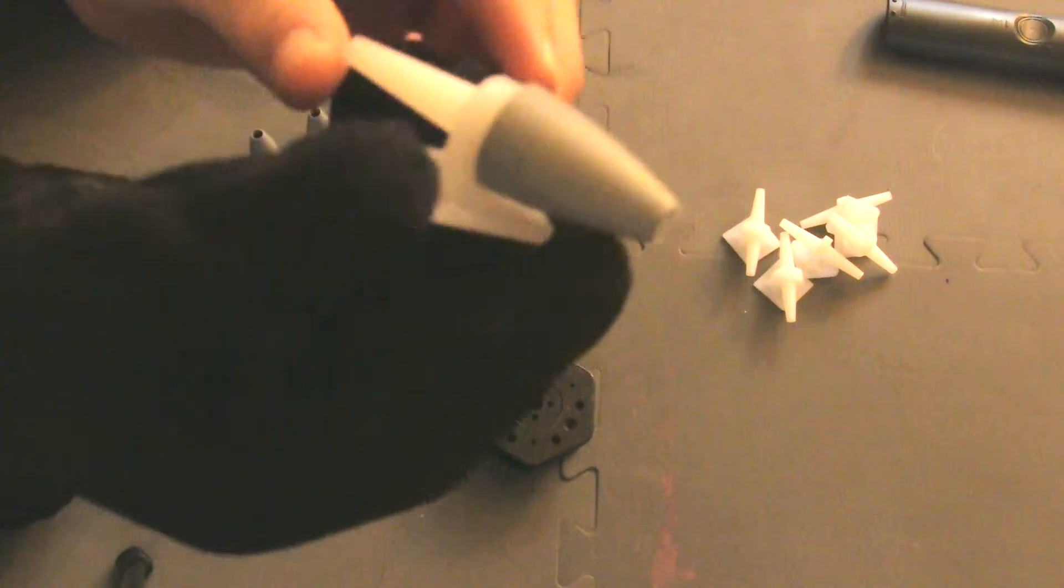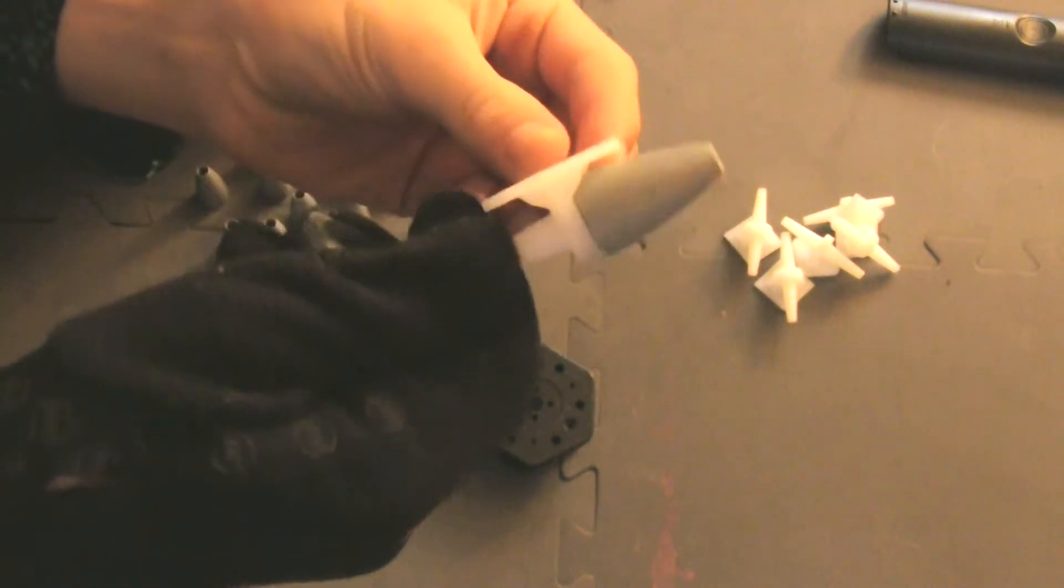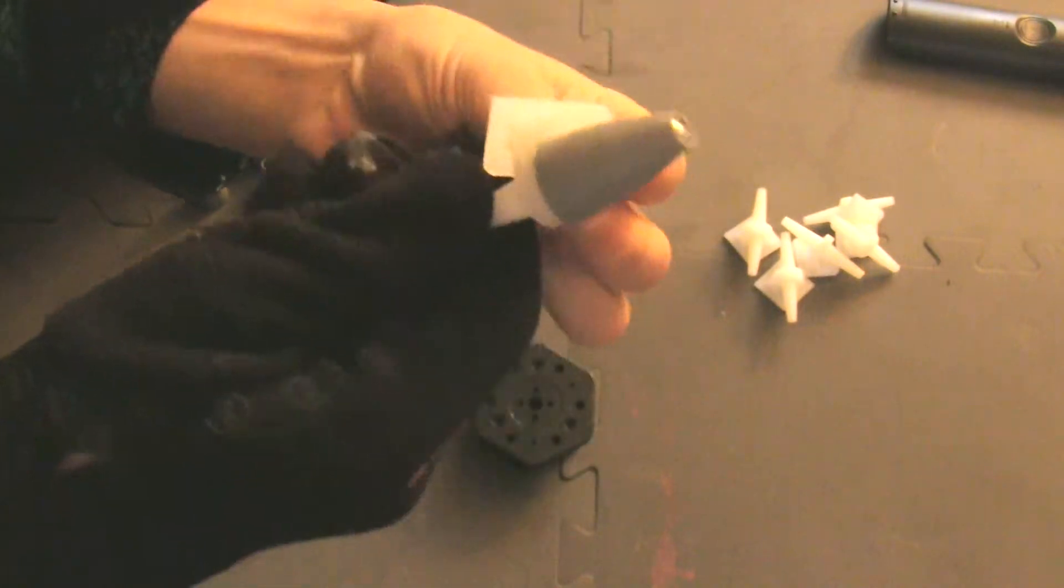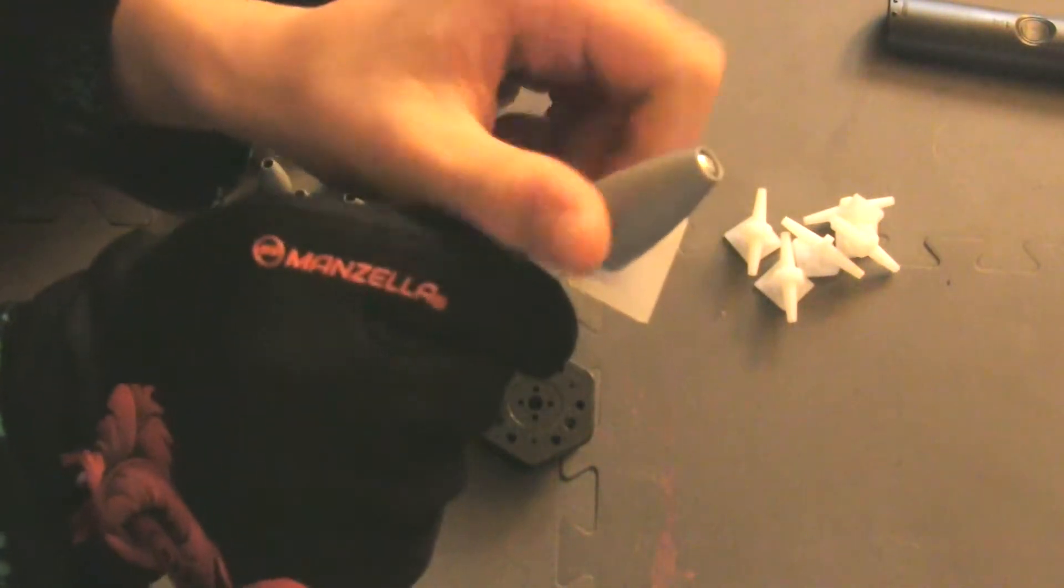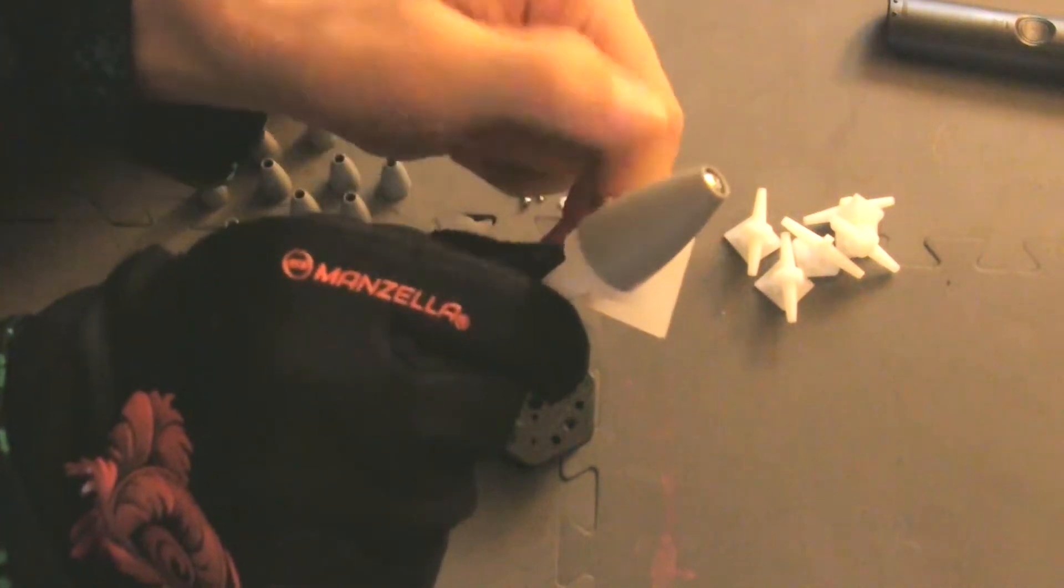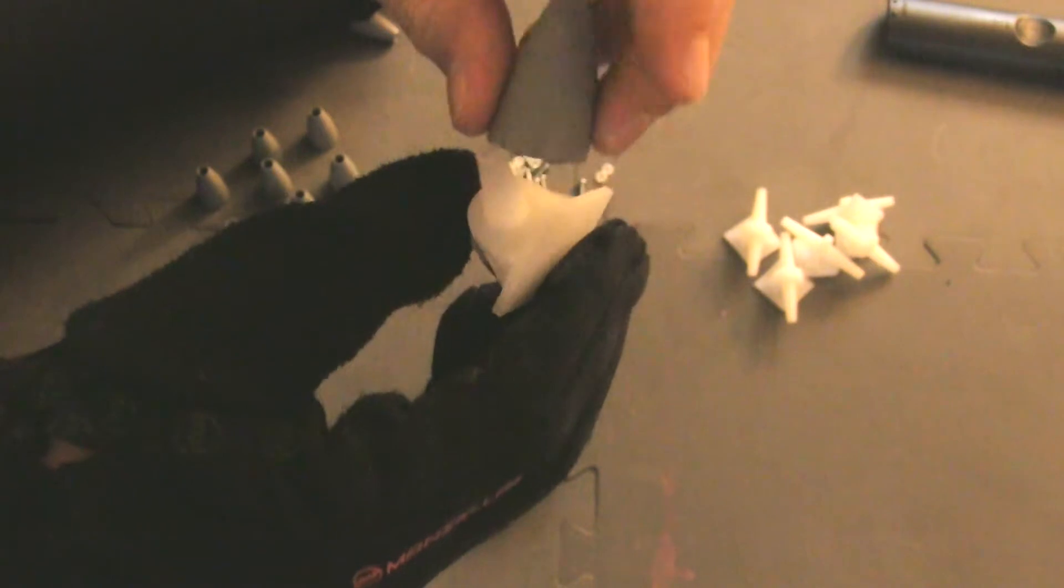So this is what it should look like when you're done. One of the most important things, though, is you want to make sure that the part number two is what we were calling it, is free spinning. Because that's what's going to enable it to glide like one of the omni wheels. So just make sure that it's free spinning. You don't want it loose, you don't want it tight, but you just want it free spinning.